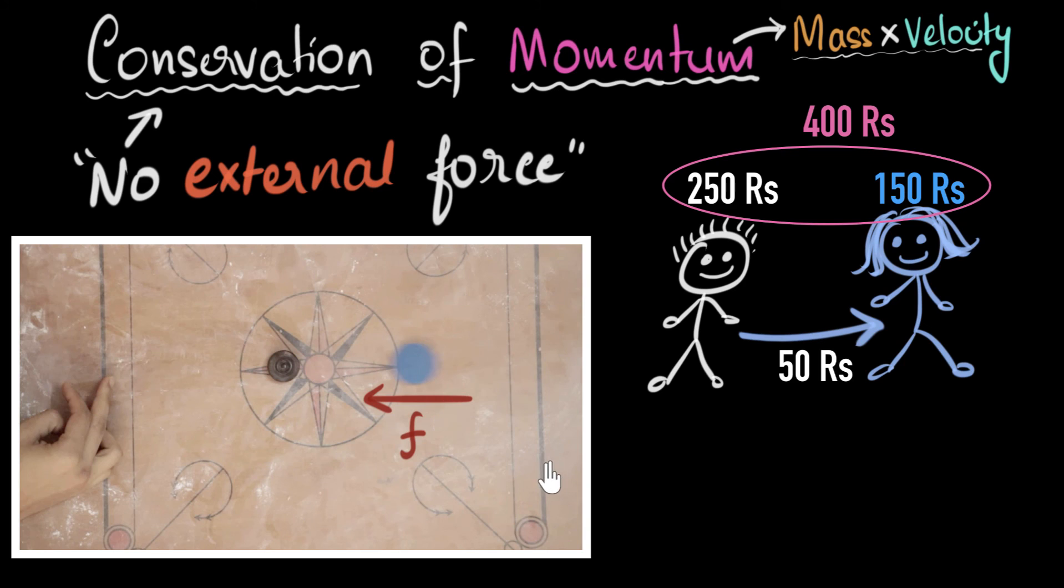It's a force acting by a body whose momentum we're not considering in our equation. Again, if we come back to the money example, imagine there is a third kid whose money we are not considering in our equation. And if these people start exchanging money with this kid, now their total money will definitely change, right? It can change, right? But of course, if we consider the money of all the three kids together, then that money will still remain conserved, isn't it? In a similar manner, if we consider the momentum of all the three things, the two coins and the carom board, then the momentum will still remain conserved, right?